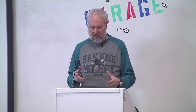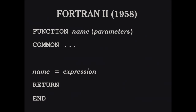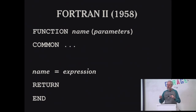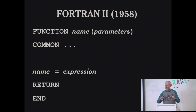Functions enter mainstream programming with Fortran 2. This is a Fortran 2 function. At that time, lowercase hadn't been invented yet, so everything was in uppercase. But it looks quite a lot like a modern function — it starts with the word function, has the name and parameters in parentheses separated by commas. It was just a subroutine that had the ability to return a value, using an assignment statement that assigned a value to the name of the function, and then the return statement delivered that to the caller.